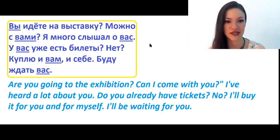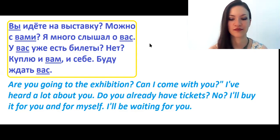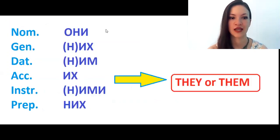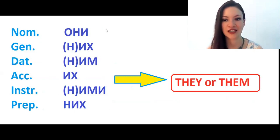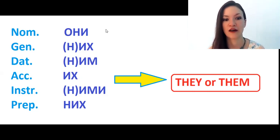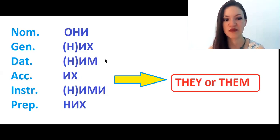Now we continue with the last Russian pronoun for today: они. Nominative: они. Genitive: них (or их). Dative: ним (or им). Note that the N can appear or disappear depending on the preposition that stands before the pronoun.